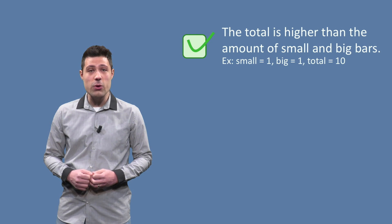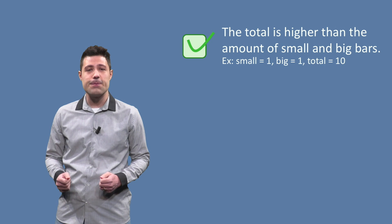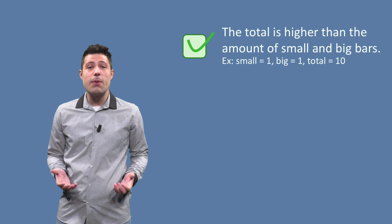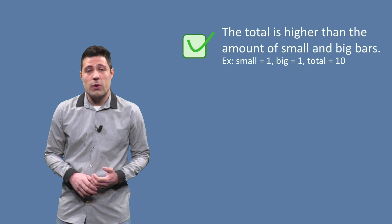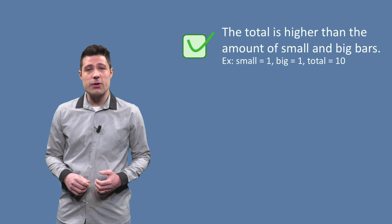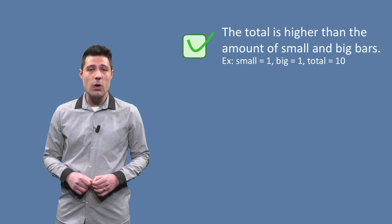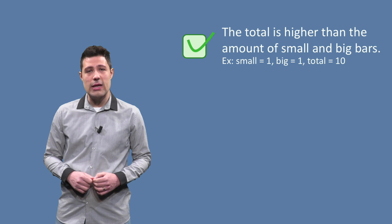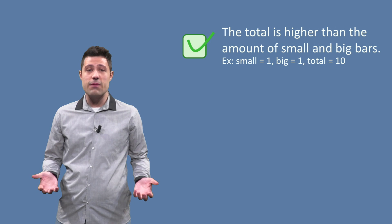We see four partitions. The first one is when the total is higher than the amount of small and big bars, meaning there are not enough bars to produce the package, and then we should return minus 1. A concrete instance for this partition can be small equals 1, big equals 1, and total equals 10. With total being 10, it is impossible to produce a package — we don't have enough bars.